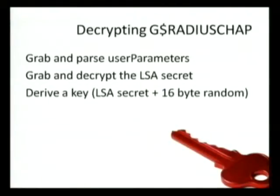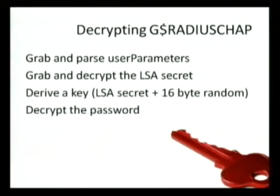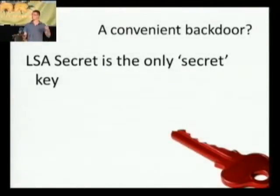You derive a key by hashing the LSA secret and the 16-byte random. If you've ever used the Windows Crypto API, there's a DeriveKey function that does this for you. Once you have the key, you use RC4 to decrypt the stored ciphertext. The whole process is a bit of a hassle to figure out, but once you know it, it's not that difficult. Since the LSA secret is the only secret component, if you steal it while on the domain controller, all the other information is publicly accessible from Active Directory — so you can do the whole decryption process from your own machine as long as you have that LSA secret.